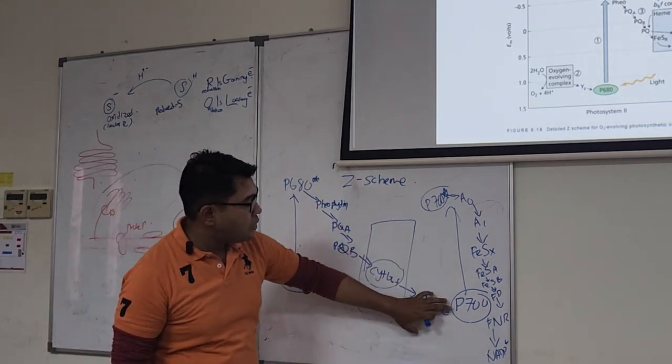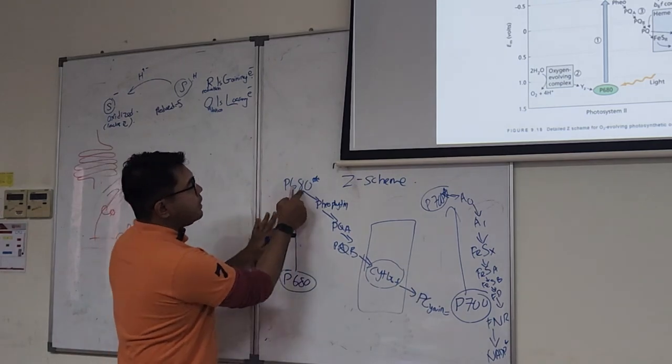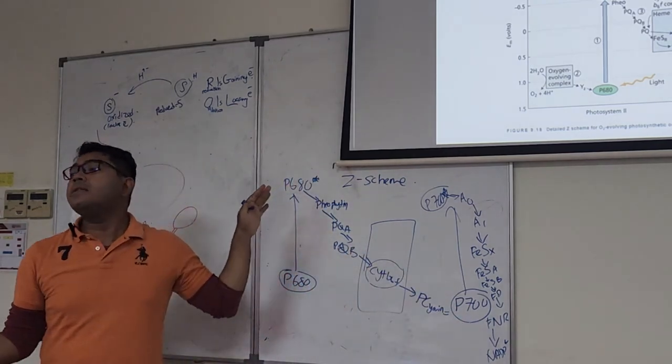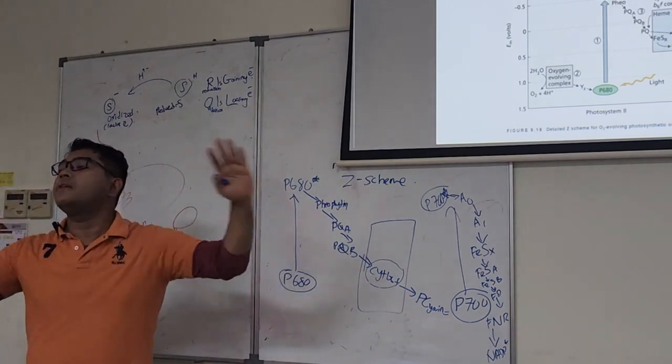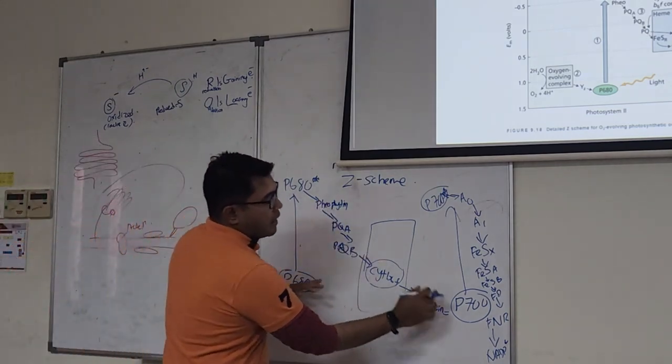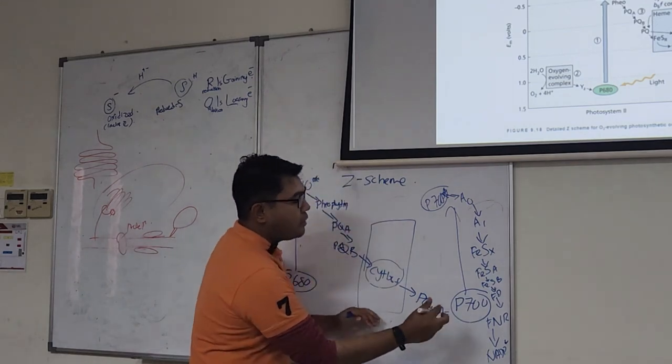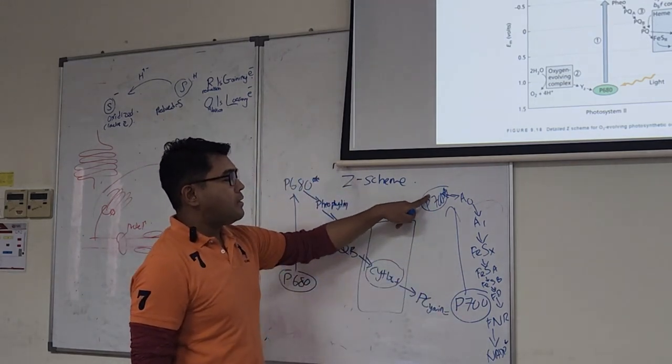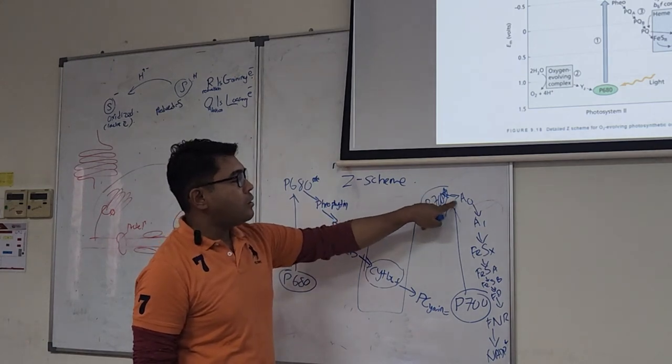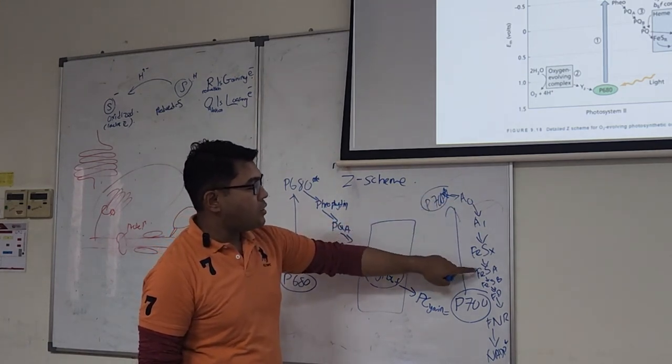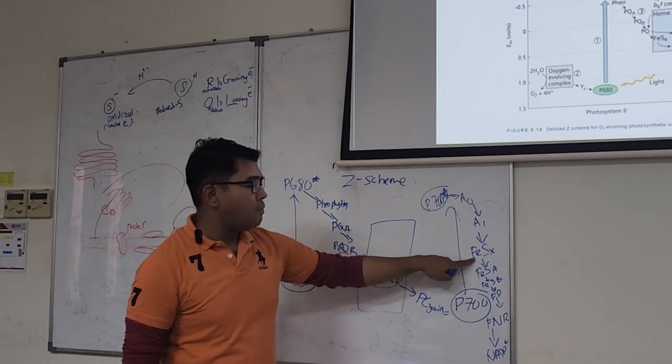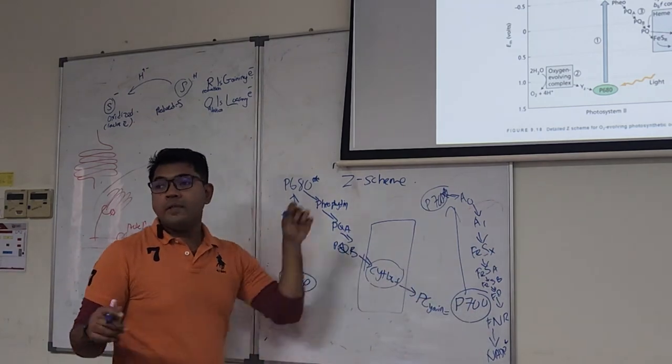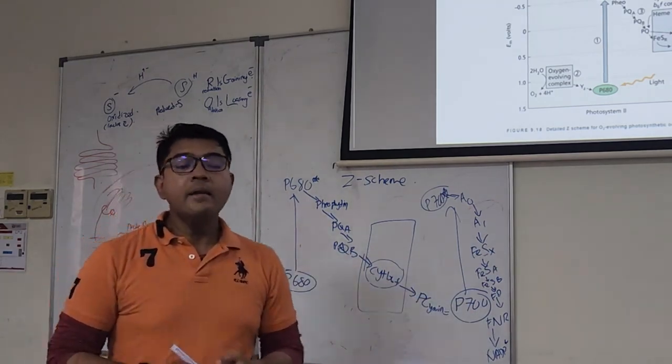Then it goes, not far. 680 nanometer to 700 nanometer. So there's only 20 nanometer worth of energy difference. Then it will excite the second reaction center, the ground state P700. Then it gets excited. Then it will transfer through this electron transport chain. So Fe means iron sulfur protein. These are all proteins.